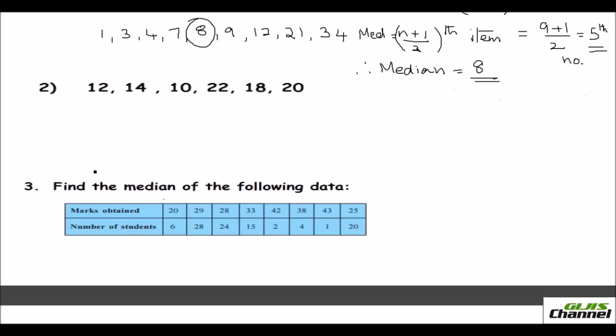Now in the second example, I have taken even number of numbers. Same way, I have list of numbers here. But here I have only 6 numbers. So 6 is an even number. I told you, you have to arrange it first. Now that we have arranged it, find out what is your n. n is 6. So that is even.